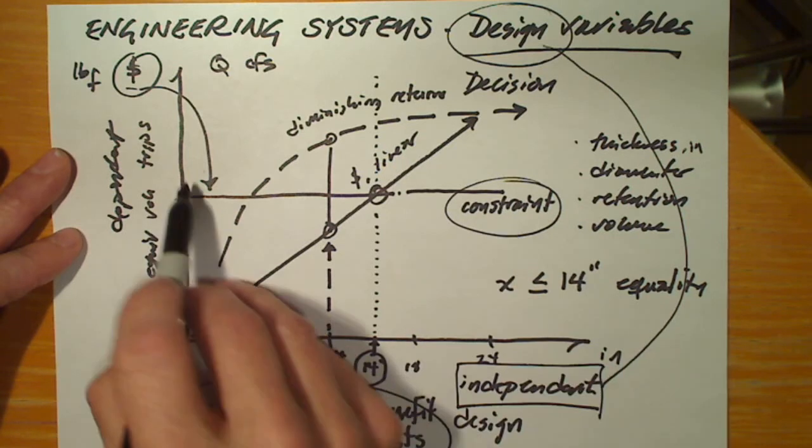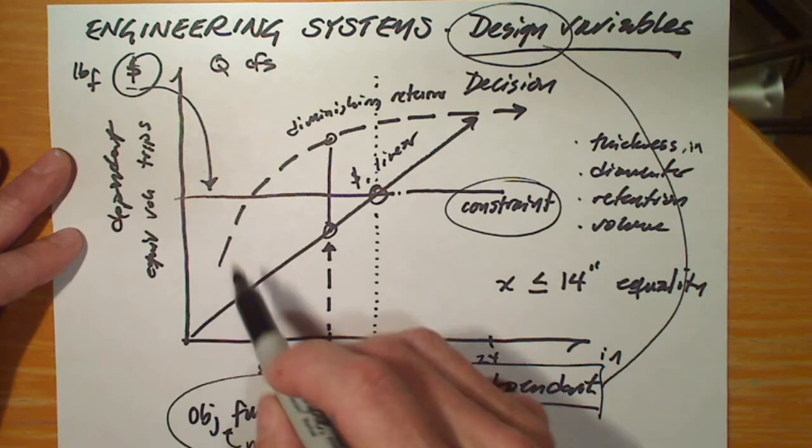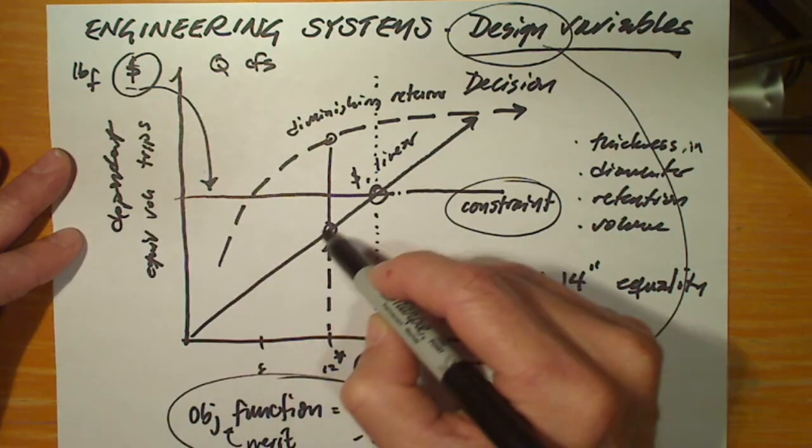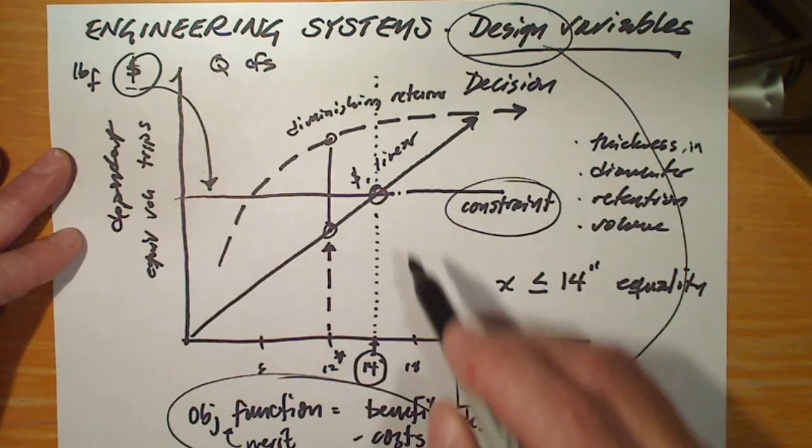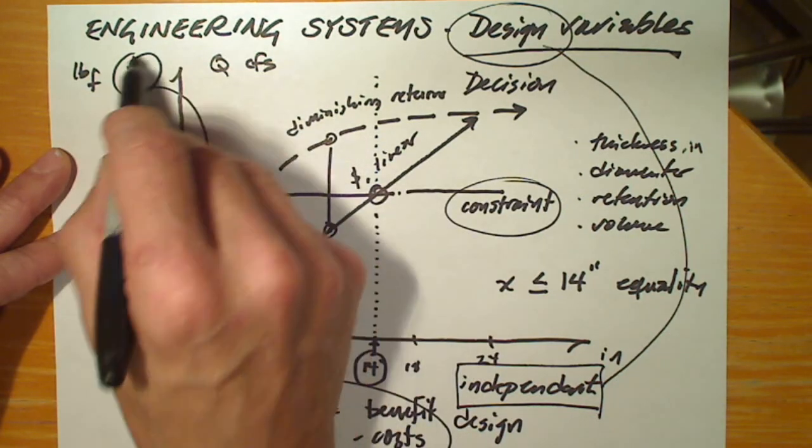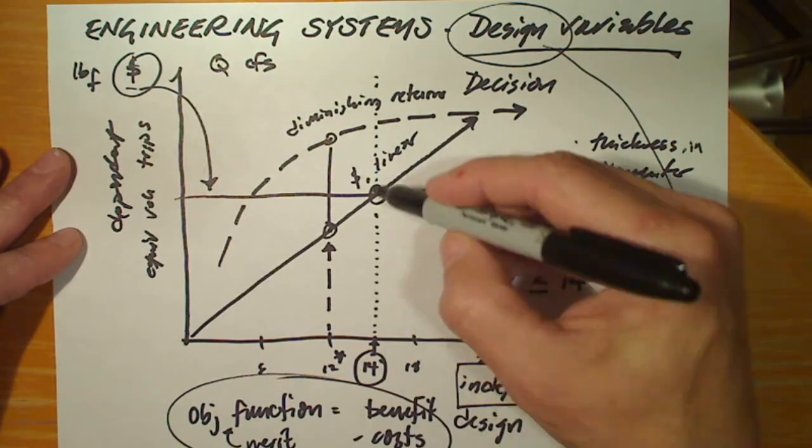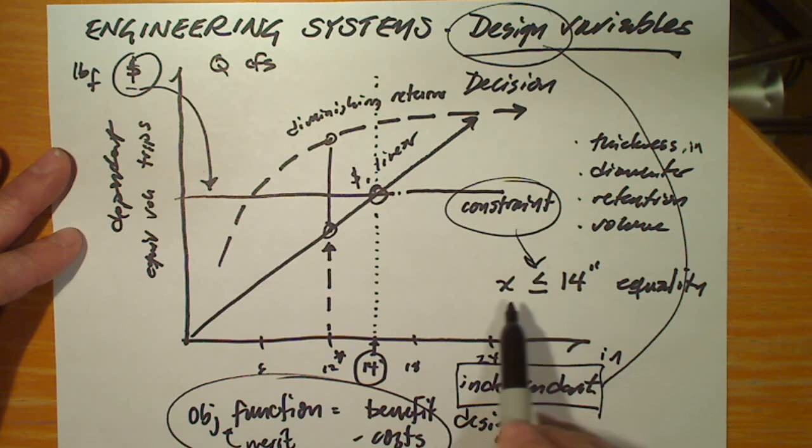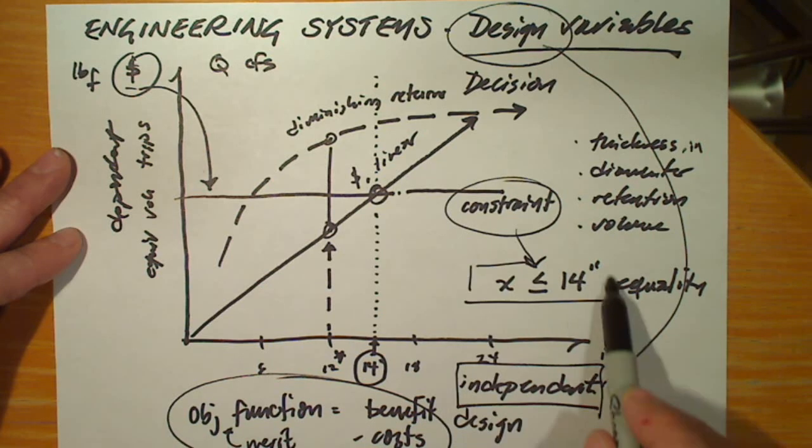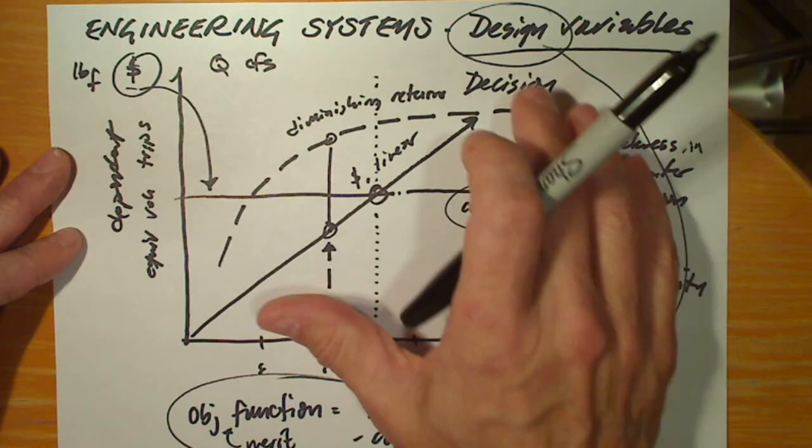And it might be that the constraint is expressed in terms of one of the dependent variables. If that's the case, then it's helpful to use the relationship between the dependent variable that the constraint is expressed in and this equation, the cost equation, so that we can re-express the constraint in terms of our design variable.